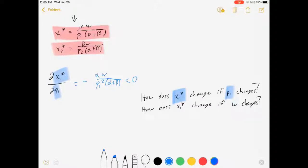And it tells us it's decreasing in price. And based on parameter values, I could make a specific prediction of how fast x1 will decrease as p changes.